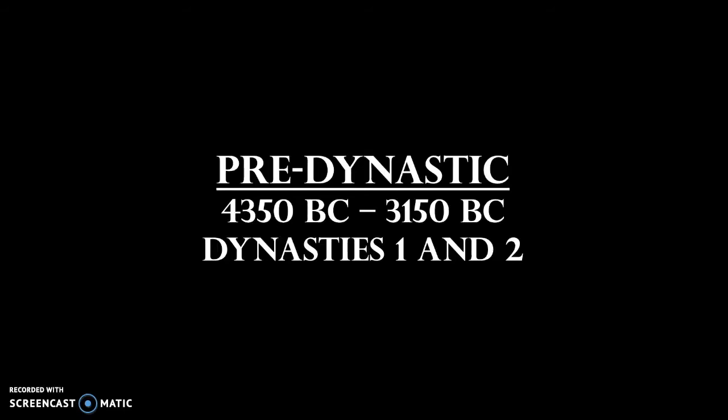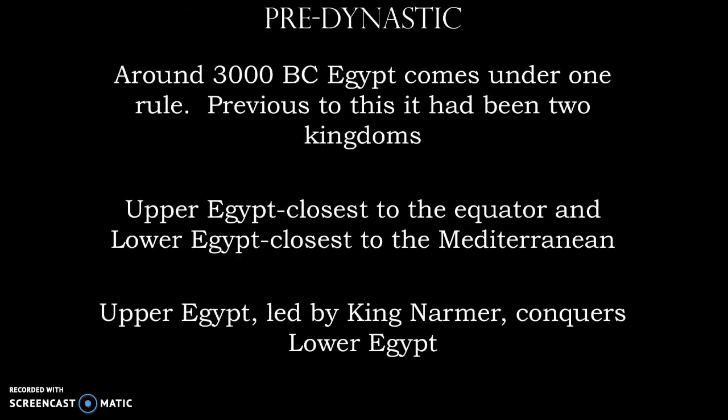With the pre-dynastic period, we're not really going to be too concerned with exact years because they don't quite match up as we get into the early kingdom. There's going to be a gap between early, middle, and late, and that's to account for periods of unrest and political instability. So with the pre-dynastic era, we're looking at roughly 3000 BC, when Egypt comes under one rule.